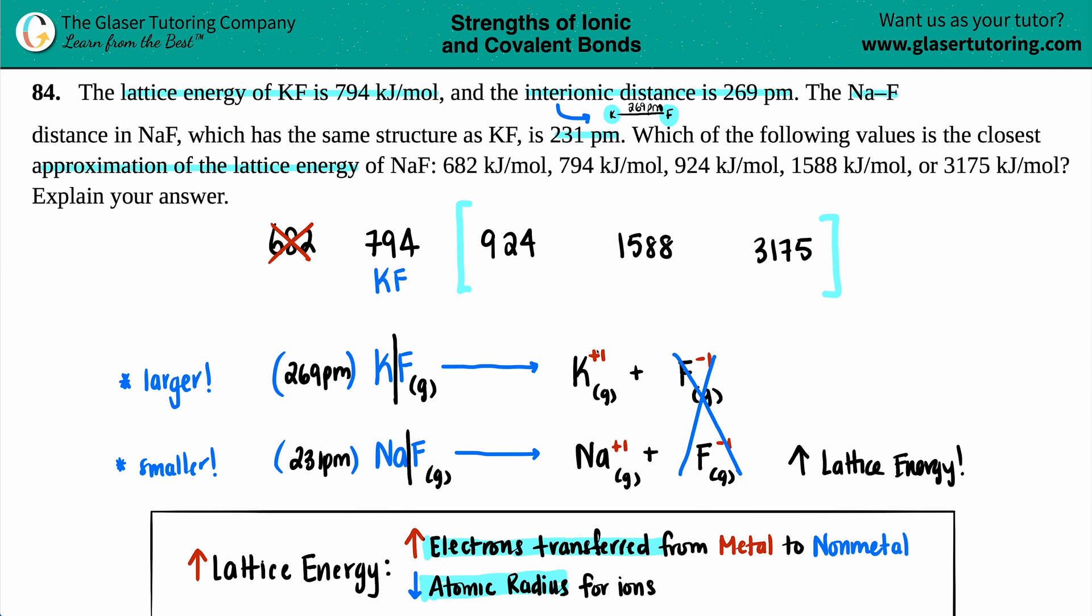Now, potassium is a plus one charge. That means that it lost one electron. And the sodium is also a plus one charge, so it lost one electron. Now, in both cases, the transfer of electrons are the same.